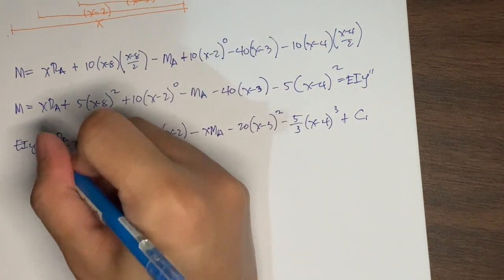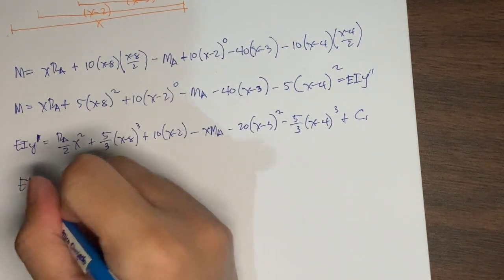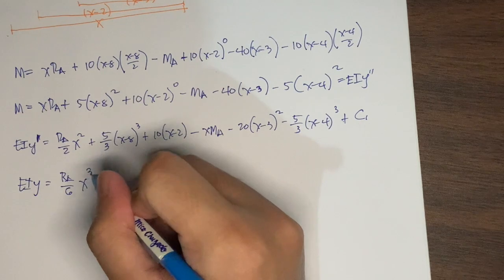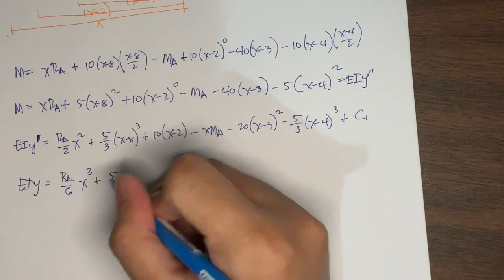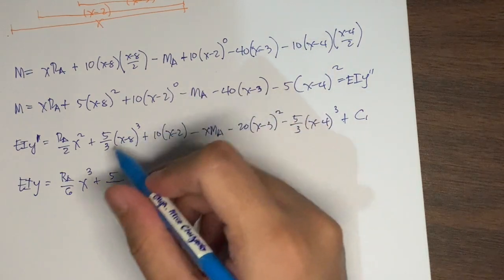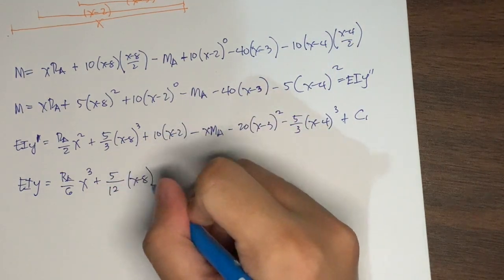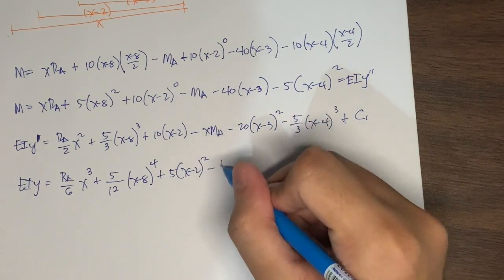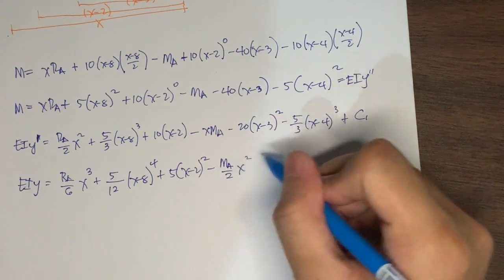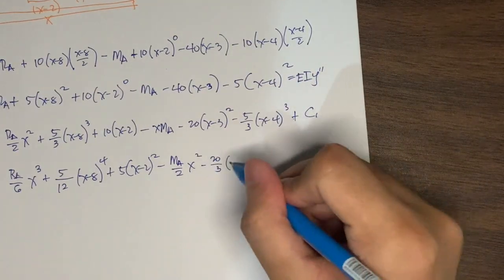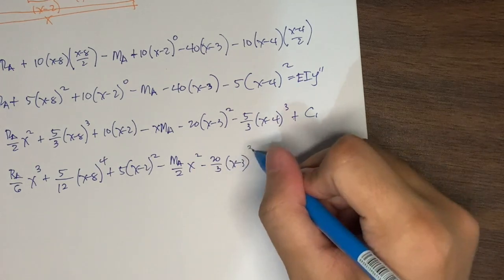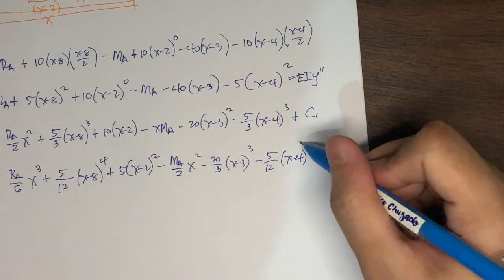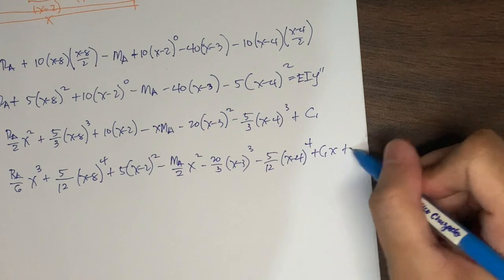Integrating again: EI y equals Ra over 6 times x cubed, plus 5 over 12 times (x minus 8) raised to 4, plus 5 times (x minus 2) squared, minus Ma over 2 times x squared, minus 20 over 3 times (x minus 3) cubed, minus 5 over 12 times (x minus 4) raised to 4, plus C1 x plus C2.